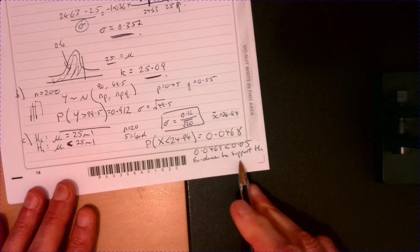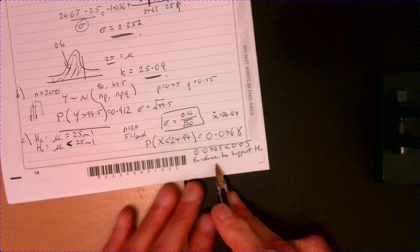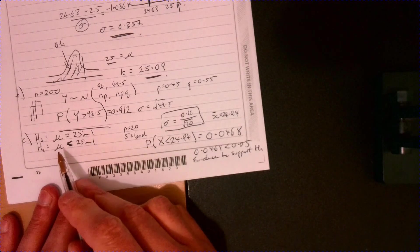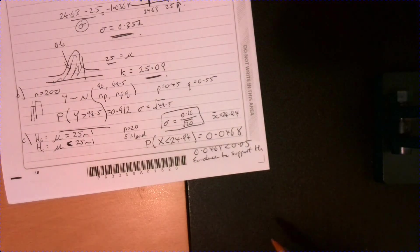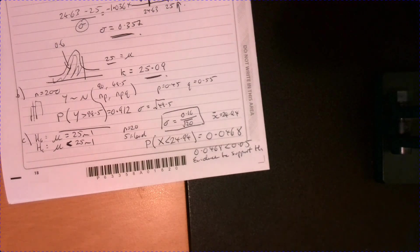That's going to evidence to support H1, the alternative. So I might go a little bit further and I might just say, so this suggests that the mean is actually below 25. I actually put it into the context there as well just to get the full mark there.